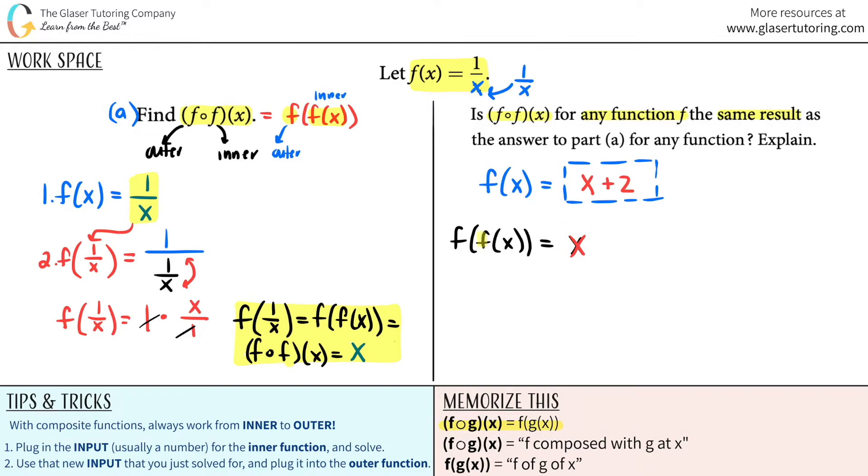So remember, this is the inner function, and this is the outer function. So the question is, will we get out x as just our answer if we use this function instead of this one? So let's see, the first part is inner function comes first, f of x equals, in this case, it's now going to be x plus two.